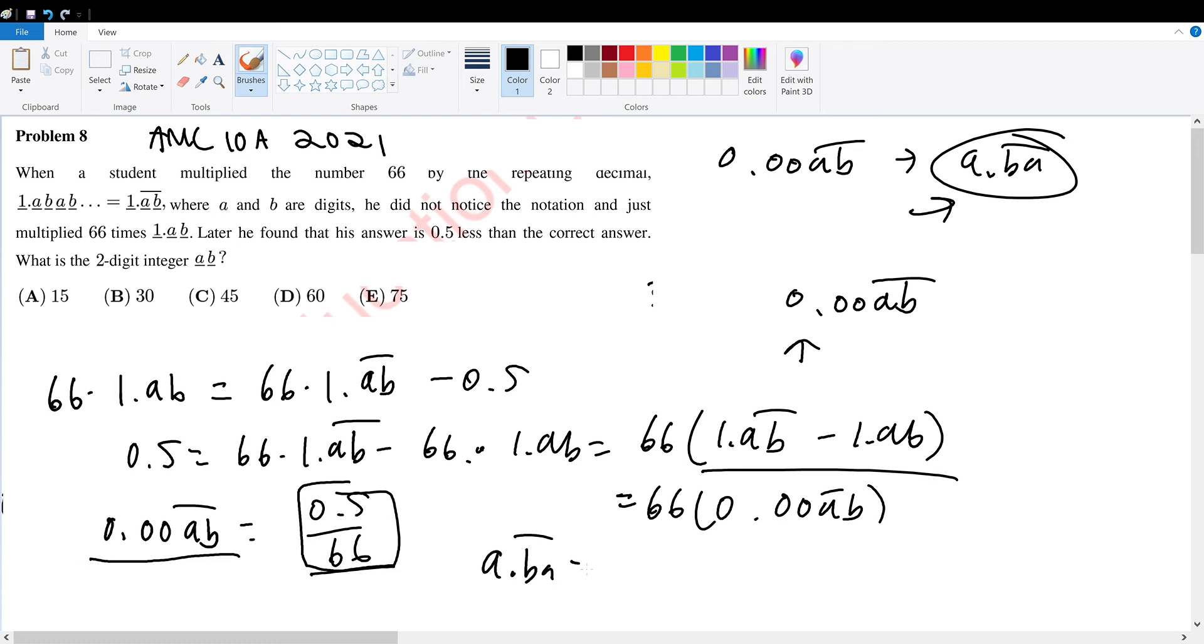So we can do A.BA repeating times 1000. So 500 divided by 66 is 250 divided by 33. So evaluate this fraction and you're done. So 250 divided by 33, we put a 7 here.